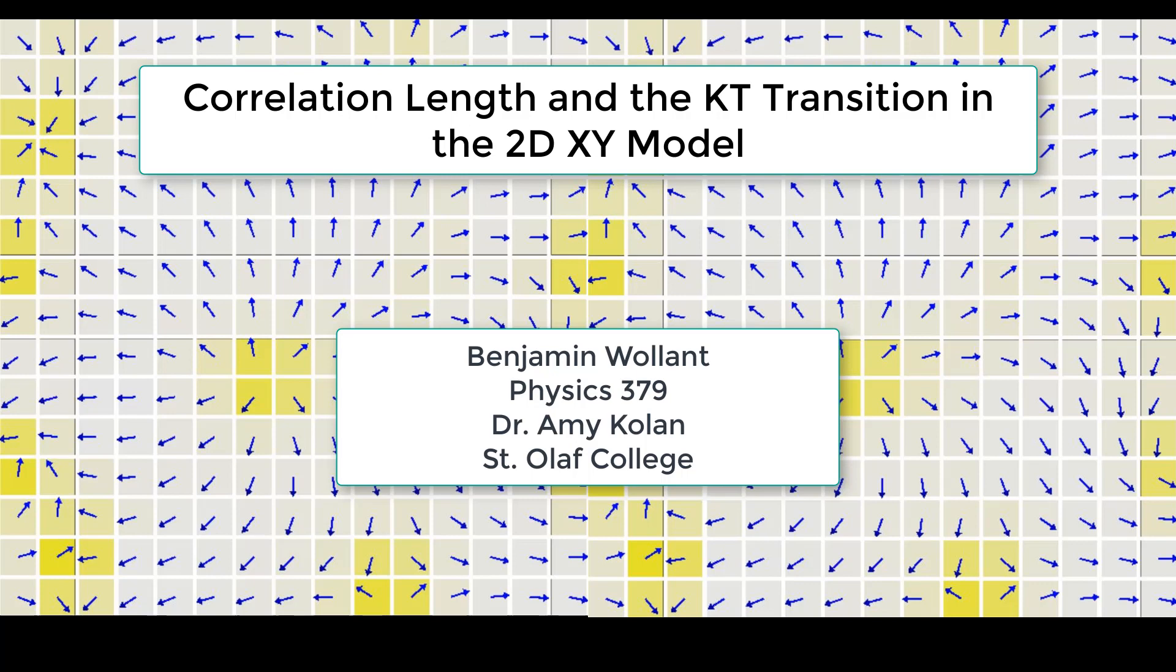Hi, my name is Ben Joulant, and today we're going to be looking at correlation length and the KT transition in the 2D XY model. This is a project for my Physics 379 course taught by Dr. Amy Cullen at St. Olaf College.